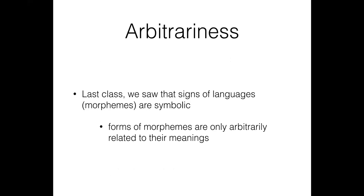We looked at arbitrariness with respect to the symbolic nature of sign systems. There are different morphemes in language, and the meanings associated with these morphemes are completely arbitrary. We saw this with 'dog' in English and 'perro' in Spanish — they have the same meaning, but the morphemes are only arbitrarily related to their meaning. There's nothing about D, A, and G that says combining them gives you that fluffy best friend of man.